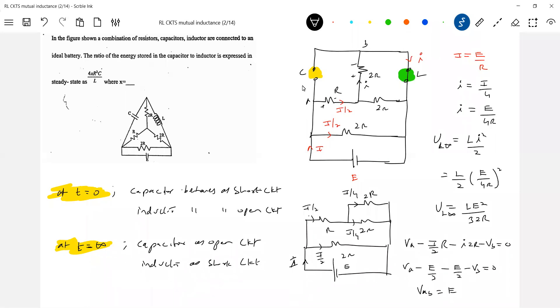So VAB is equal to E. So then what is the charge across the capacitor? Q should be equal to C into VAB is equal to C E. Then what is the energy stored across the capacitor? UC infinity should be equal to Q square by 2C.